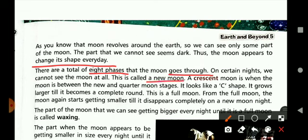Crescent moon is when the moon is between the new and quarter moon stages. It looks like a C shape. It grows larger till it becomes a complete round, and this is full moon.